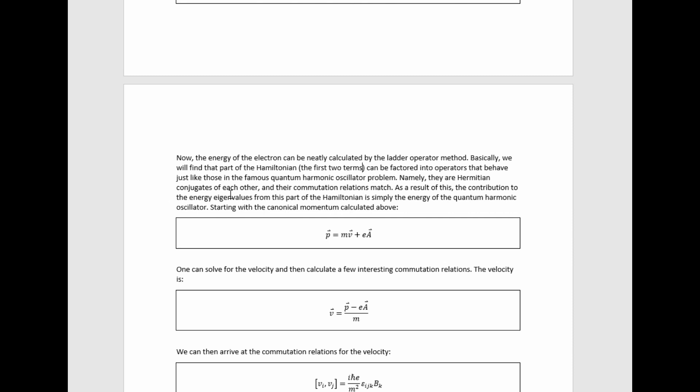Namely, they are Hermitian conjugates of each other, and their commutation relations match. As a result of this, the contribution to the energy eigenvalues from this part of the Hamiltonian is simply the energy of the quantum harmonic oscillator. Specifically, it's given by the formula for the eigenvalues of that particular problem.